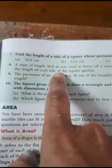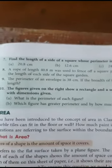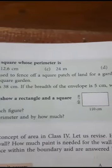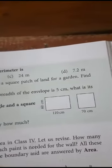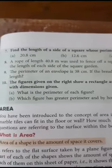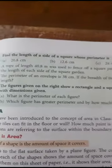It is given in the form of a statement: A rope of length 40.8 meters was used to fence off a square patch of land for a garden. Find the length of each side of the square garden. I have just drawn a diagram over here.